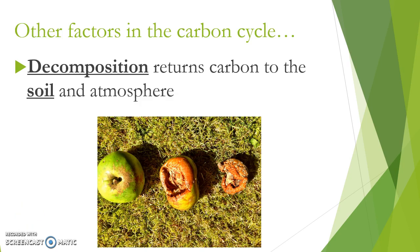Other factors that affect the carbon cycle. The first is decomposition. Decomposition is going to return carbon to the soil and the atmosphere. When a decomposer — bacteria or fungi — breaks down dead organic matter like a dead apple, they are eating it, so they're respiring and returning carbon dioxide to the atmosphere. Any carbon that is not consumed is then absorbed into the ground and released so that producers can absorb that carbon, continuing the cycle of carbon moving between the ground, living things, and the atmosphere.